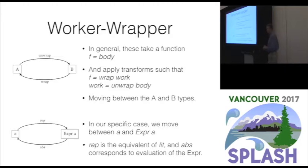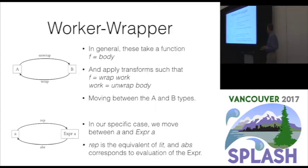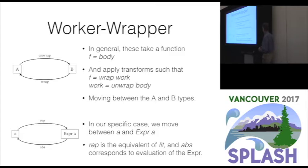We're doing these transformations with a worker-wrapper as the base transformation. In general, if you have a function with a body and you want to apply a worker-wrapper transformation, you can wrap a function — the worker — which is an unwrapping of the original body. This allows us to move between types A and B using unwrap and wrap. In our specific case, we want to move between base Haskell types and the expression types in our deep language. We do that using rep, which is the equivalent of a lit — similar to what we heard about in the lightweight modular staging talk — and abs is the reverse, corresponding to evaluation of the expression.